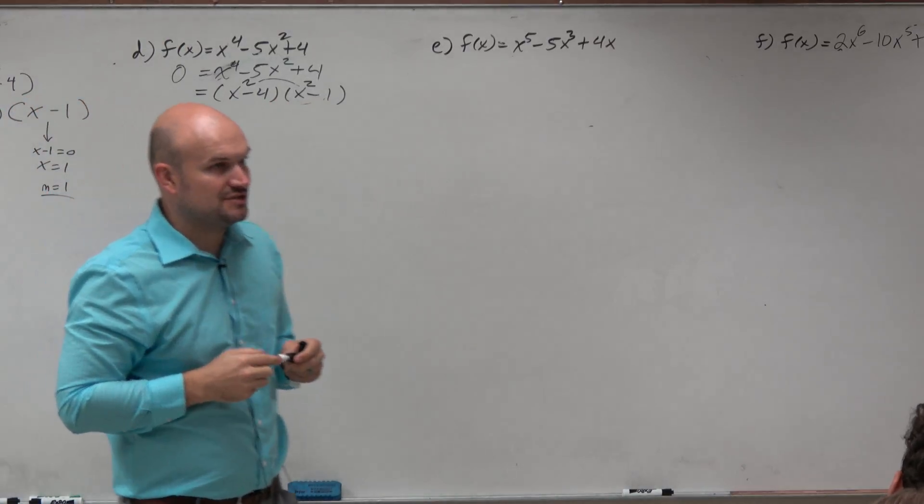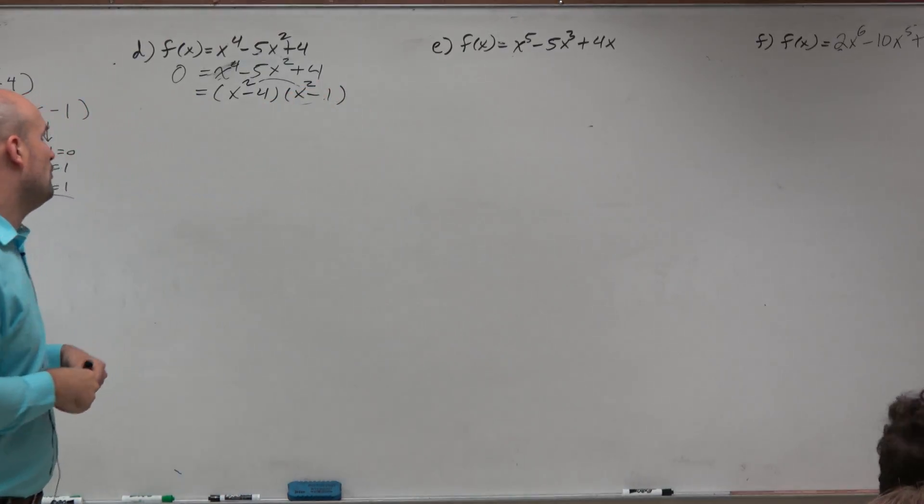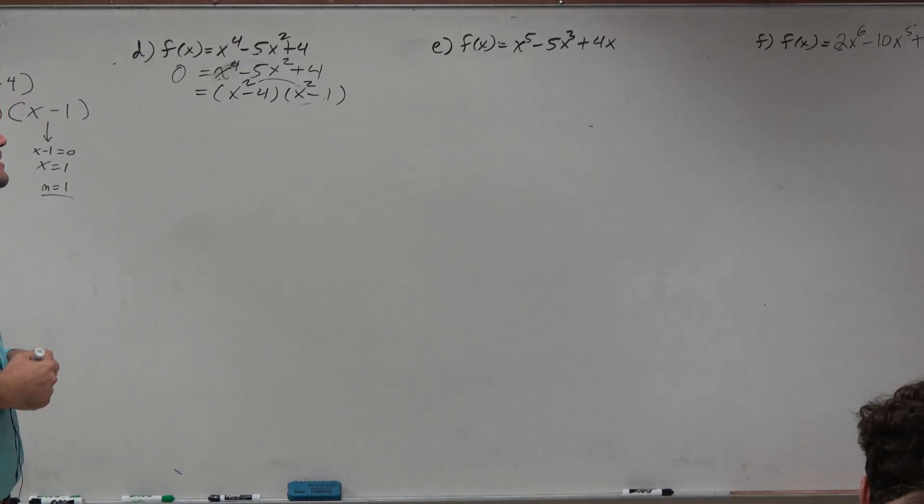Now, here's one of the big mistakes, too. And say, oh, well, let me go ahead and find my zeros. The zeros are 4 and 1 with a multiplicity of 1. I say, well, we've got to be careful.